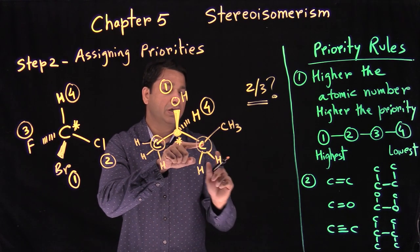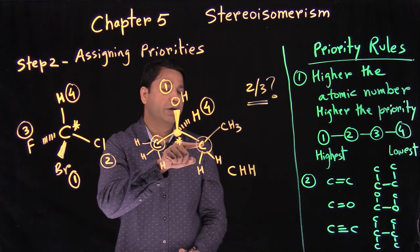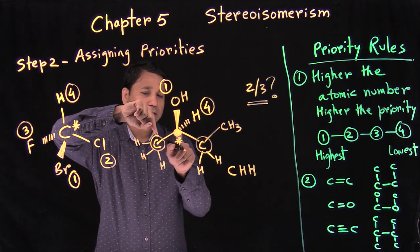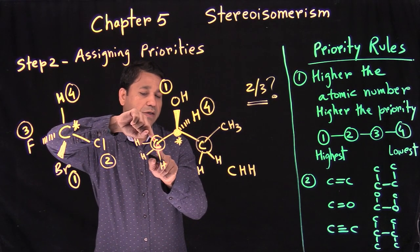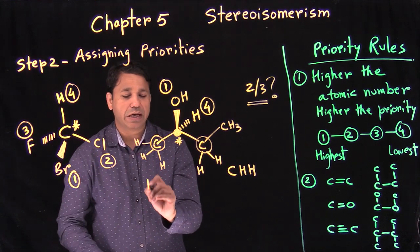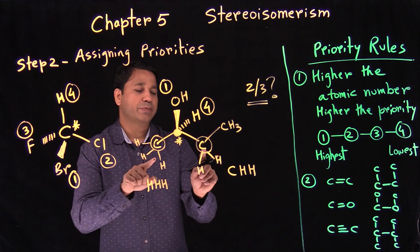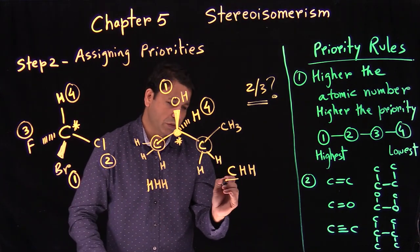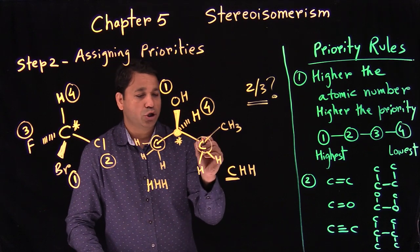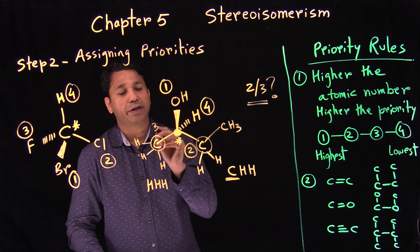What's coming out of this carbon? We have a carbon, a hydrogen, and a hydrogen. So the second point of contact is C, H, H. And from the other carbon, the second point of contact is H, H, H — just three hydrogens.